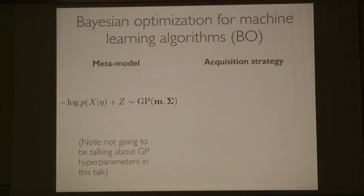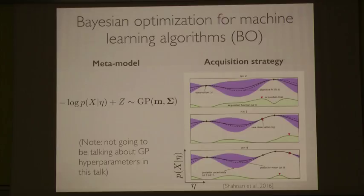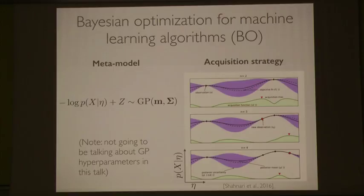In the acquisition strategy, we have a bunch of options. Here's a schematic from a recent review paper on Bayesian optimization. Say you've seen two data points: the y-axis is the marginal likelihood and the x-axis is eta. You've seen two evaluations of your approximate inference algorithm, and your meta-model — the solid line — is an approximation of the true dotted line. An acquisition function tells you where to evaluate next. Options include upper confidence bound, expected improvement, or Thompson sampling.